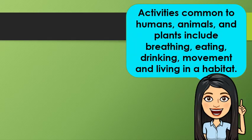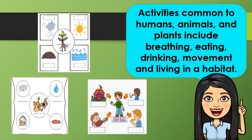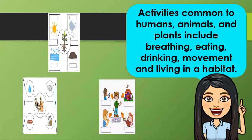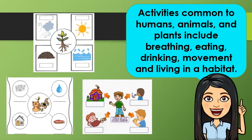Activities common to humans, animals, and plants include breathing, eating, drinking, movement, and living in a habitat — a place where living things live.